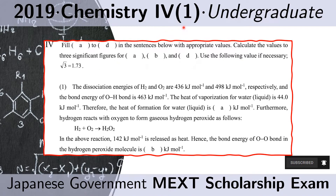Problem 1 of 4. Fill A to D in the sentences below with appropriate values. Calculate the values to three significant figures for A, B, and D. In this video we will only do problem 1, so we will only be looking at A and B.